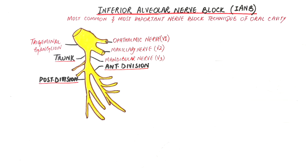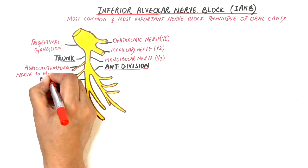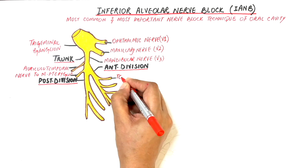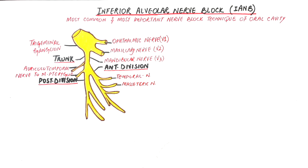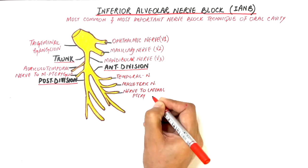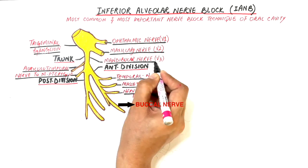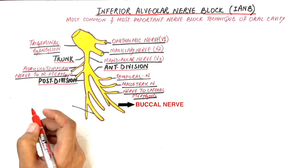Nerves that branch off from the trunk are the auriculotemporal nerve and the nerve to the medial pterygoid muscle. Branches of the anterior division include three motor branches and one sensory branch. The motor branches innervate the muscles of mastication — these are the temporal, the masseteric, and the nerve to the lateral pterygoid. The buccal branch is the only sensory branch of the anterior division, which supplies the buccal mucosa around molars.